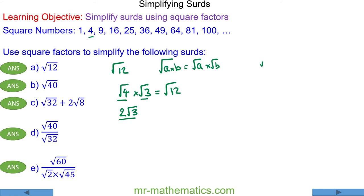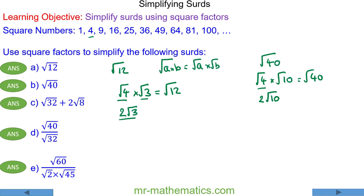For the square root of 40: the square root of 4 multiplied by the square root of 10 makes the square root of 40. I've chosen the square root of 4 because 4 is a square number, and we can square root it to get 2, giving us 2√10.